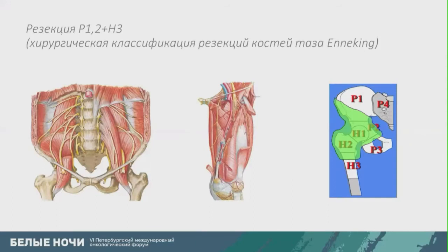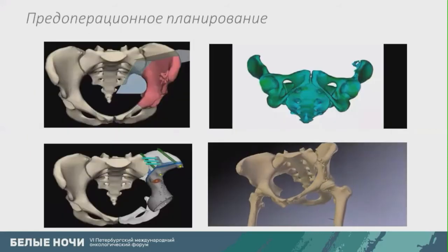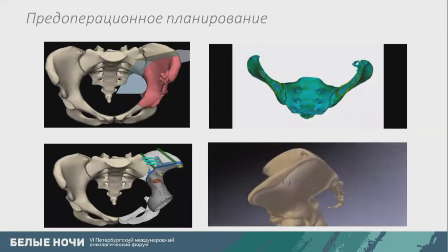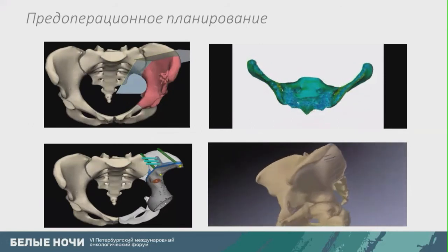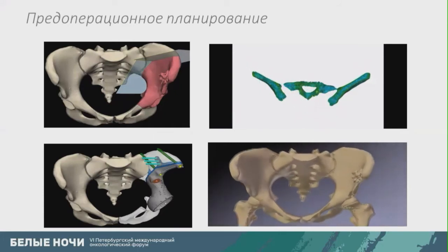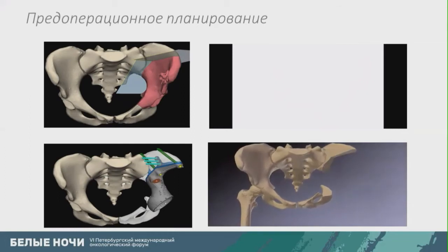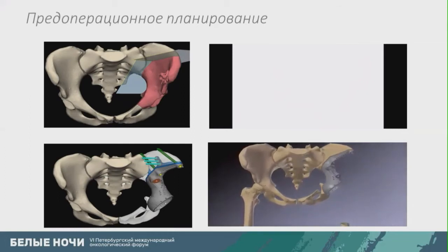With pre-op planning, we assessed anatomical risks of surgery. A specific feature of pelvis bone surgery is the necessity to handle pelvis bones and various nerves and vessels. At the first pre-op planning stage, we look at the Hounsfield parameters and also develop and design the implant and the way to fix it.